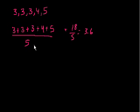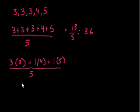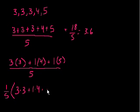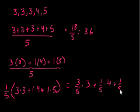If we rearrange the math a little bit, we can view it differently. We have three 3's, so that's 3 times 3. We have one 4, so plus 1 times 4, plus 1 times 5. All divided by 5. This is the same thing as 1 fifth times (3 times 3 plus 1 times 4 plus 1 times 5). Distributing the 1 fifth gives us 3 fifths times 3, plus 1 fifth times 4, plus 1 fifth times 5.